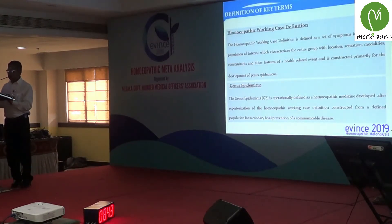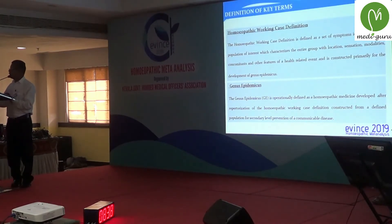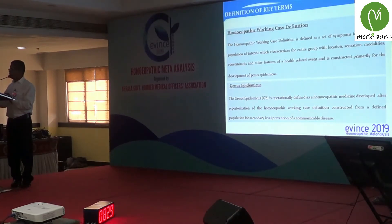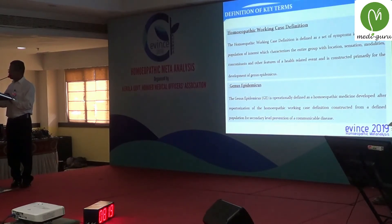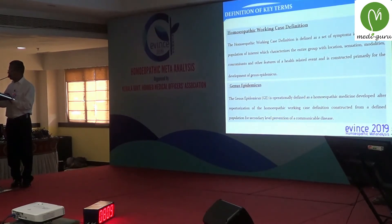Definition of key terms: The homeopathic working case definition is defined as a set of symptoms identified within a population of interest which characterizes the entire group — with location, sensation, modalities, concomitants, and other features of a health-related event — and is constructed primarily for the development of genus epidemicus. Genus epidemicus is operationally defined as a homeopathic medicine developed after repertorization of the homeopathic working case definition, constructed from a defined population for secondary level prevention of communicable disease.